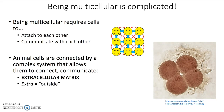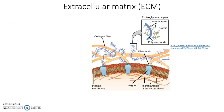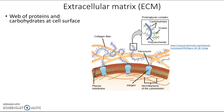The prefix 'extra' is there to mean 'outside,' so this is something that is primarily outside of the cell. Here's a diagram showing the extracellular matrix — it's made up of a web of proteins and carbohydrates at the cell surface, and it's located outside of the plasma membrane.